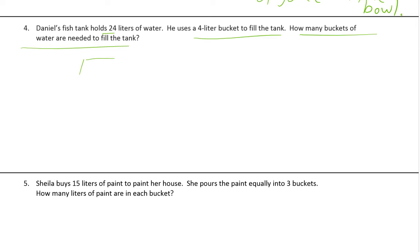Our picture is going to show 4, 4, 4, 4, 4, 4. Counting up: 4, 8, 12, 16 — another four is 20, another bucket makes 24, and we stop there. How many buckets? One, two, three, four, five — that's six buckets.